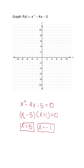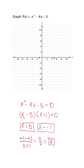We could plot those two points first. The next point we want is typically the vertex. To find the vertex, we use the formula: the opposite of b divided by 2a. In the quadratic equation, b is negative 4, so the opposite of b over 2 times a — and a is 1 — turns out to be 4 divided by 2, so x is equal to 2.